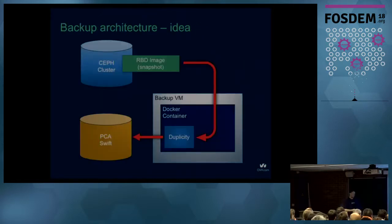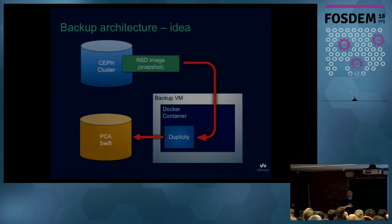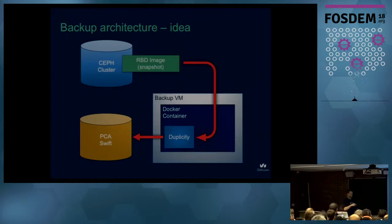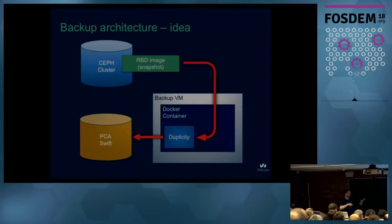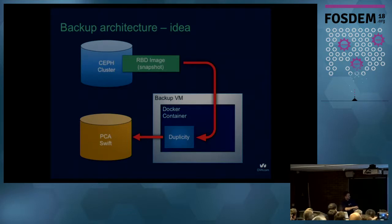This is the initial design: we have the Ceph cluster, create a snapshot of the image to have a consistent state, export it through some kind of backup VM, containerize parts of our infrastructure for automatic local storage cleanup, pass it through Duplicity, and throw it out to our Swift storage. It looks fine — so let's see how it works in practice.